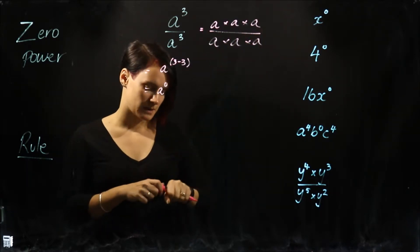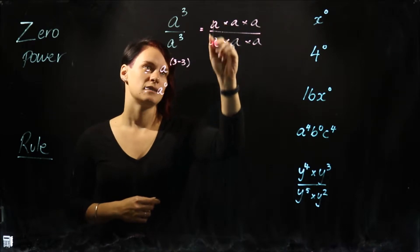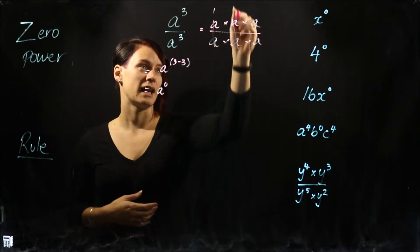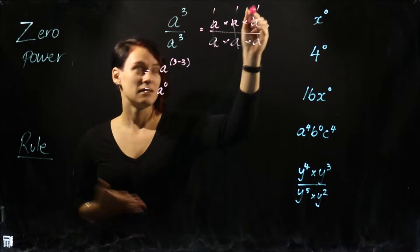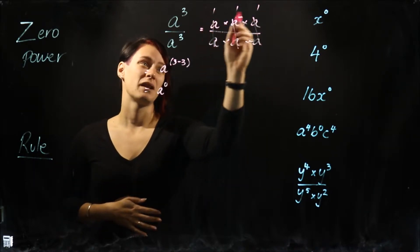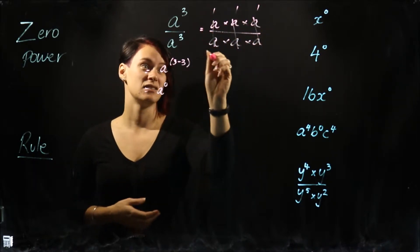Let's go back up here to our expanded version and say, okay, A divide A is just one, A divide A is one, and A divide A here is one again. So what we're left with is one times one times one, which is actually just one.